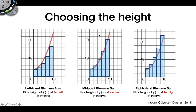Here are the conventions for choosing where on each subinterval to place the height of our rectangle. We have the left-hand Riemann sum, the midpoint Riemann sum, and the right-hand Riemann sum. With the left-hand Riemann sum, we choose the height of our rectangle to be at the leftmost point of each subinterval. For example, if our width is 2, we pick 0 as the height for the first rectangle, then 2 for the next, and so on. Visually, you are always placing the left corner of each rectangle on the curve.